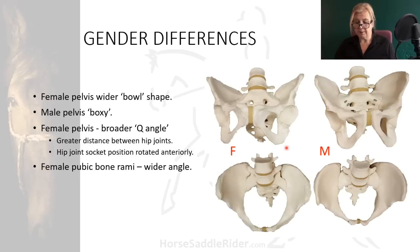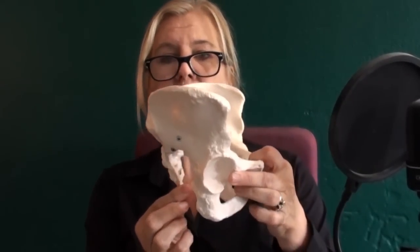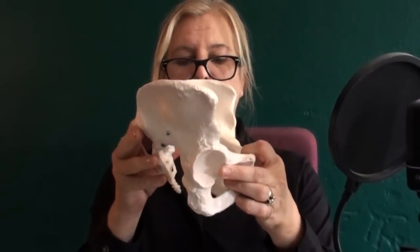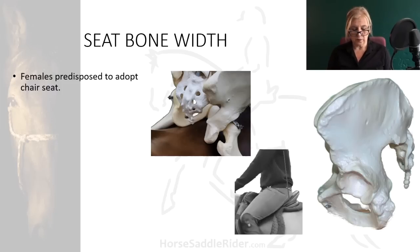The female pubic bone rami are wider in angle compared with the male, and their caudal bones are shorter. Males have an extra bony point to help stabilize their pelvis in the saddle. The female caudal bones haven't got much to prevent them from tipping back into a chair seat. The significance of all these factors means that the geometry of the female pelvis is predisposed to adopt a chair seat in the saddle.